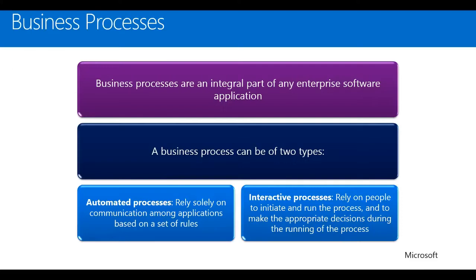Business processes are an important part of a solution. Being able to automate and control the flow of the process is key to user adoption of the system, as well as making sure the right information is getting into the system. Dynamics CRM has two types of processes: automated processes based on actions or results of working in the system, and interactive processes initiated and run by the end user. Automated processes consist of workflow, custom workflow activities, and plugins. Interactive processes consist of dialogues.